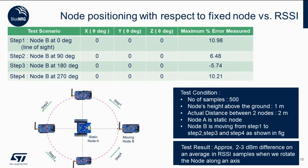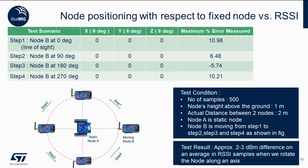The RSSI value is also affected by the position of the transmitter node, in this case node B, with respect to the antenna on the receiver, in this case node A. To have a better understanding of how the positioning is affecting the RSSI value of the signal with respect to a fixed node, we tested 500 samples under these conditions. As a result of this test, we got a similar result to the previous one — a 2 to 3 dBm difference between the values on average.